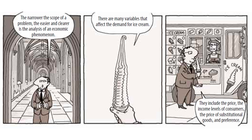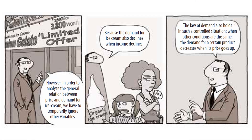There are many variables that affect the demand for ice cream, including the price, the income levels of consumers, the price of substitutional goods, and preference. However, in order to analyze the general relation between price and demand for ice cream, we have to temporarily ignore other variables, because the demand for ice cream also declines when income declines. The law of demand holds in such a controlled situation: when other conditions are the same, the demand for a certain product decreases when its price goes up.